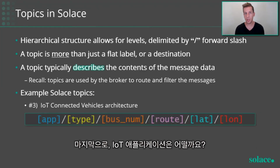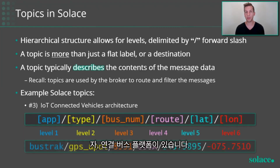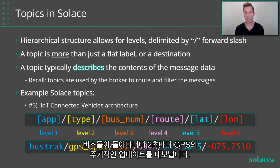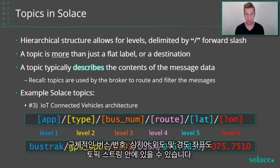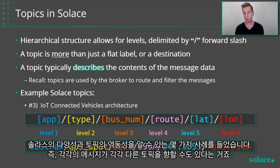And finally, how about an IoT application? With a connected buses platform, buses are driving around sending periodic GPS updates every couple of seconds. You might want the route number, the bus number, and even the latitude and longitude coordinates encoded in the topic string. These examples are meant to give you an idea of the variety and how dynamic topics are in Solace — each and every message could actually be going to a different topic.